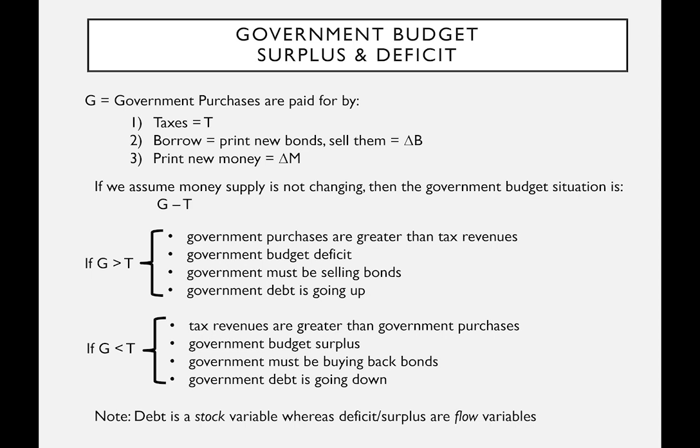To summarize the government budget constraint: government purchases, G, appear in aggregate demand C plus I plus G plus net exports. G is financed by either taxes, which are real, or borrowing — the government prints bonds and sells them, which becomes a future tax — or the central bank prints money, which is a nominal variable. If excessive, this leads to the inflation tax.